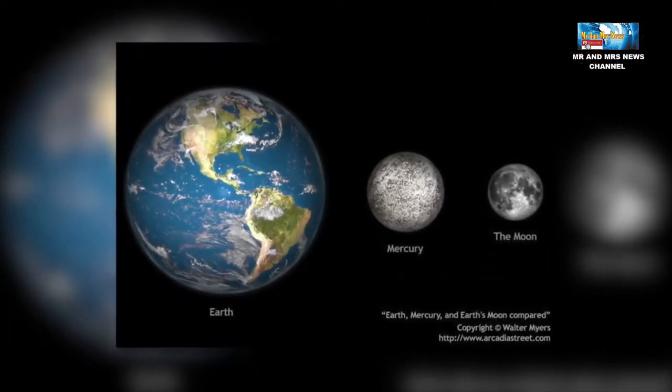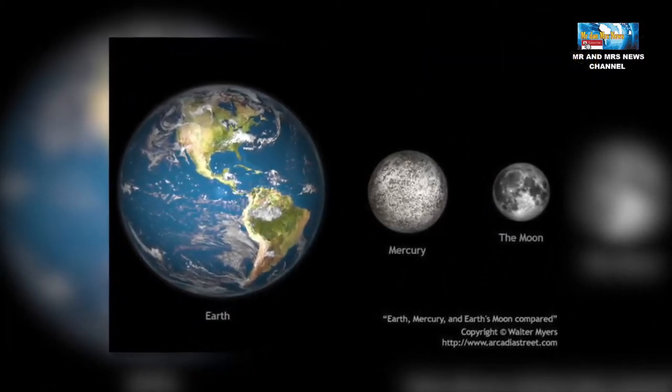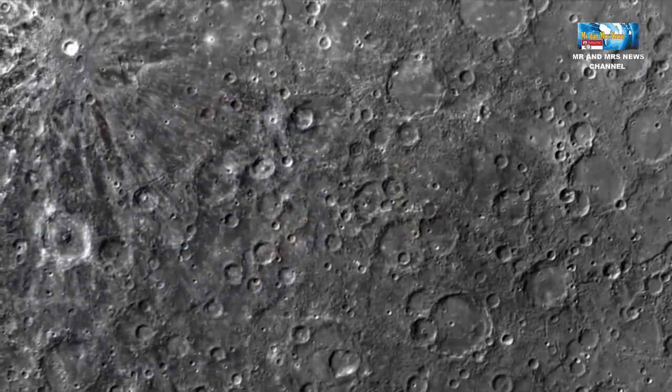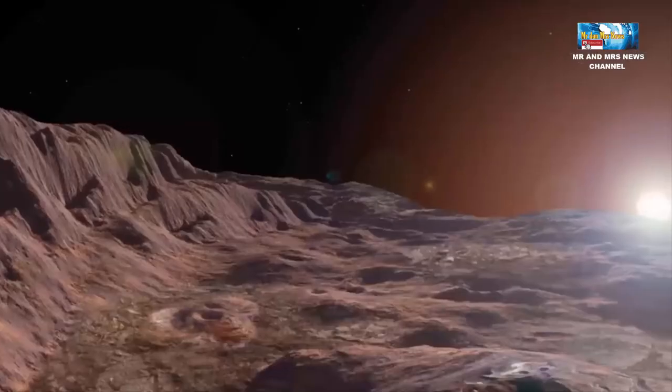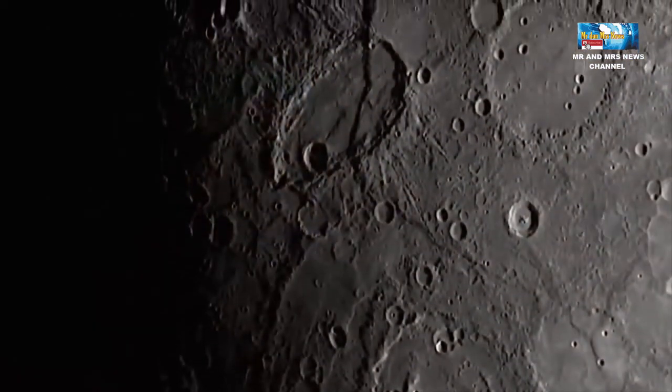Merkurius adalah planet terestrial. Artinya, Merkurius terbentuk dari material bebatuan. Permukaan Merkurius menyerupai satelit alami bumi, yaitu bulan.